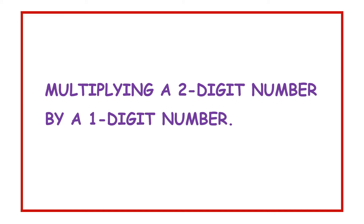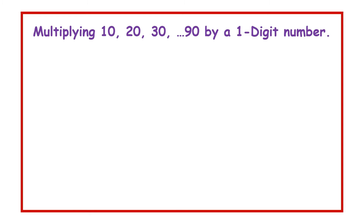Hello students. Today we are going to study about multiplying a two-digit number by a one-digit number. We are going to focus on multiplying 10, 20, 30, 40, 50, 60, 70, 80, up to 90 by a one-digit number.